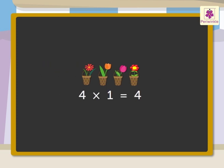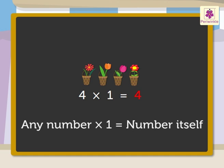So, here we multiplied the number 4 by 1 and we got the answer as 4. That is, the number itself. Hence, any number multiplied by 1 is the number itself.